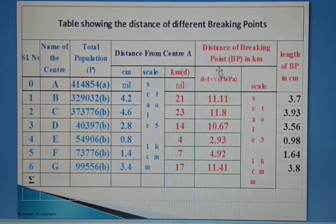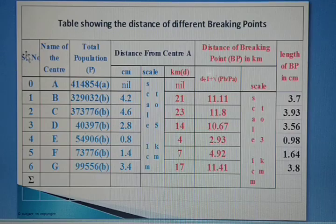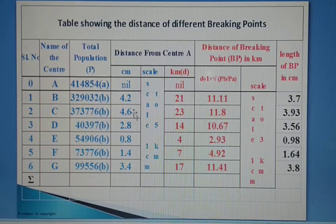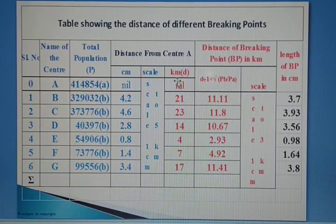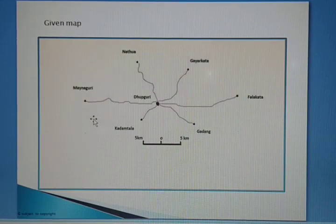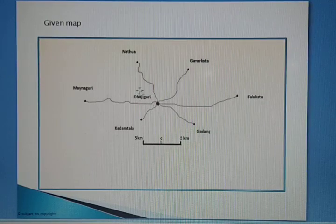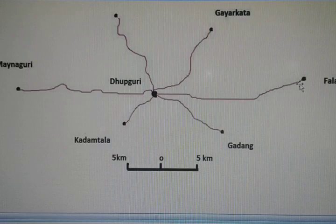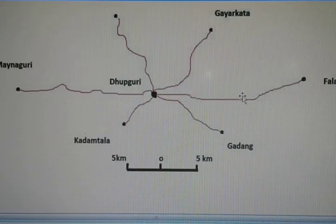In the next table I am showing how to find the breaking point (BP). The columns include serial number, name of center, and total population — all already given. One important thing to remember: if kilometer distances are not given, you have to find them from the map. For example, on the given examination map, you can use a rotameter to find the distance between Dhubguri and Falagata.